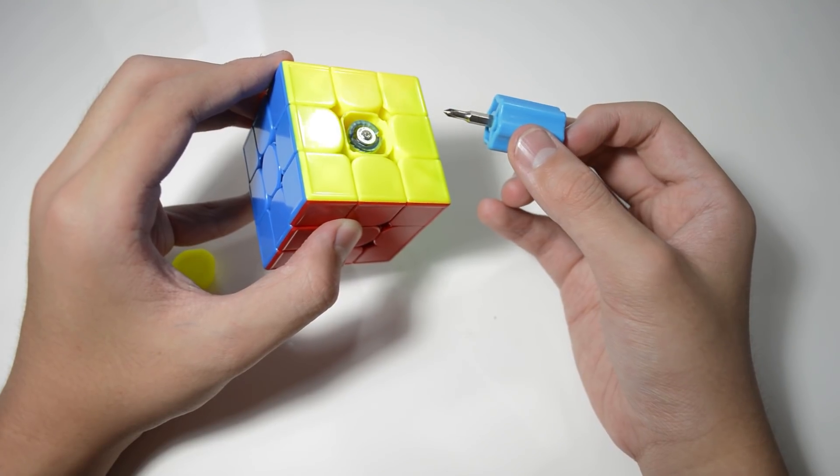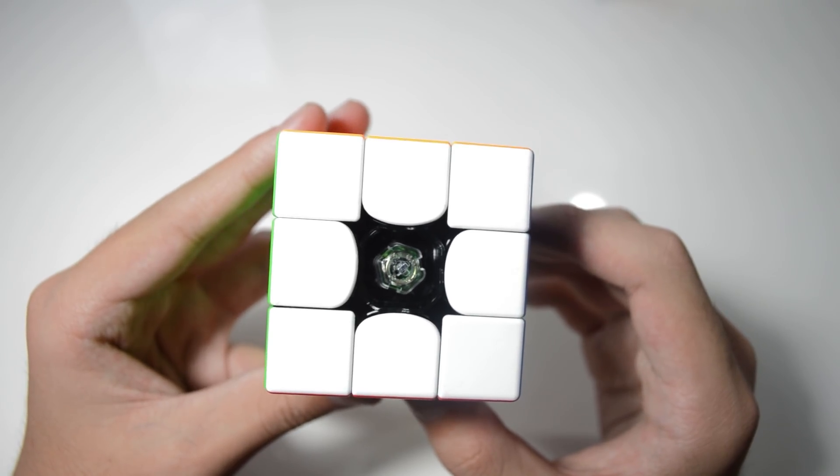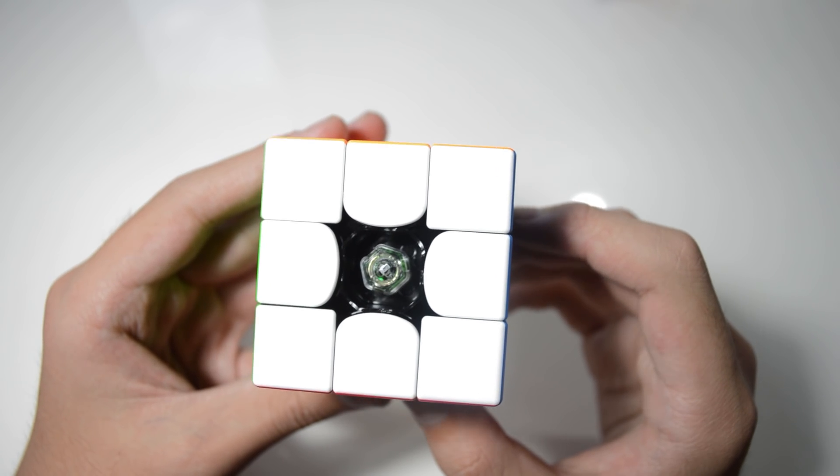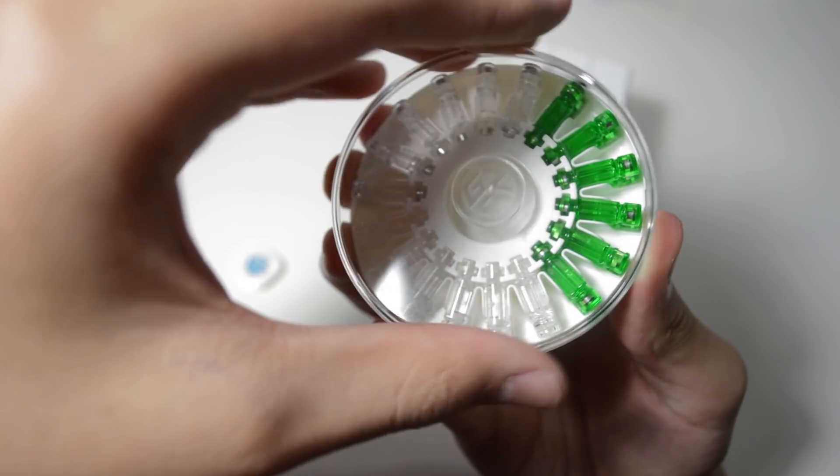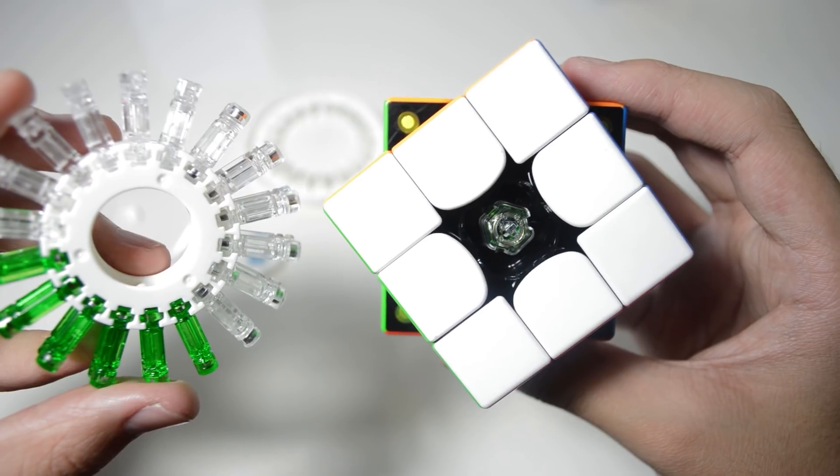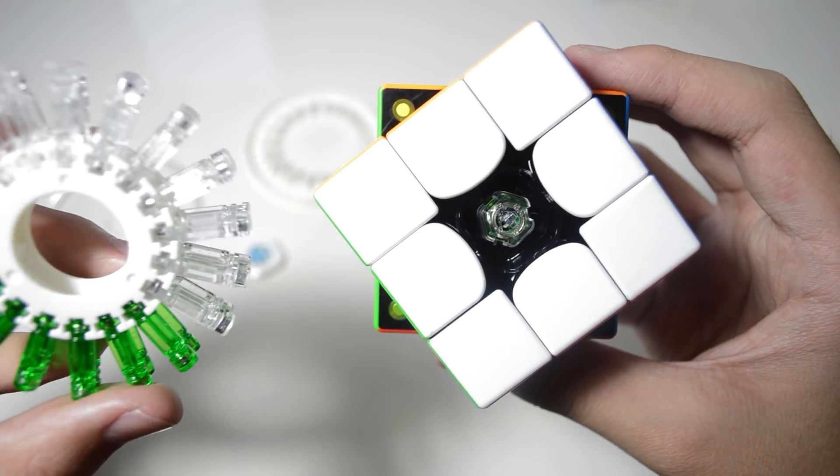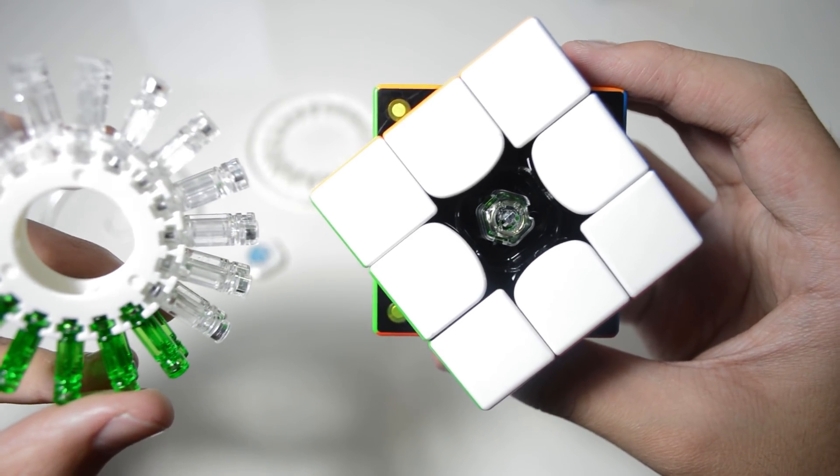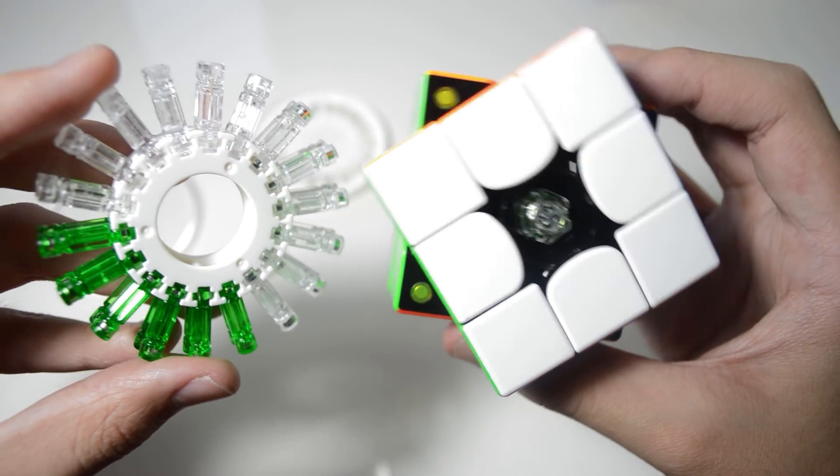So what has GAN done with the 356X? They took it one step further. You can obviously still change the tensions with the adjustable GES nuts, but you can also change the magnet strength to your liking. You likely wouldn't be complaining if the magnets on this cube are too weak or too strong, because you've got four settings to choose from: no magnets, weak, medium and strong.